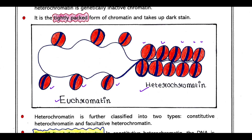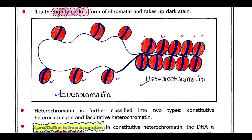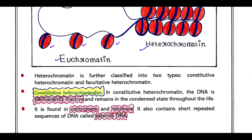Now heterochromatin is further classified into two types: constitutive heterochromatin and facultative heterochromatin.